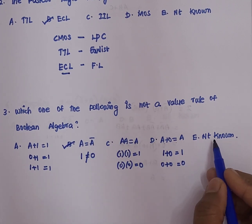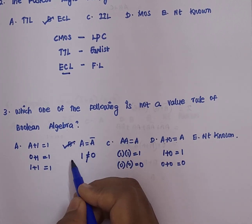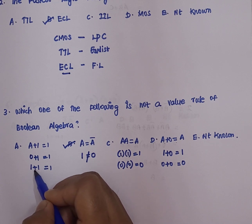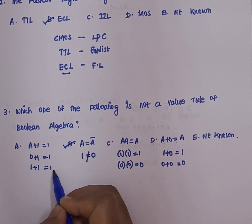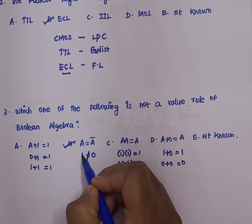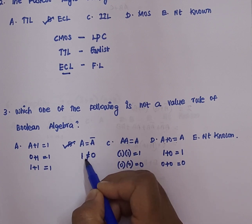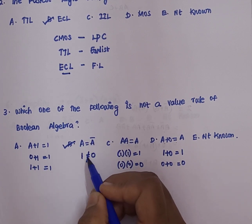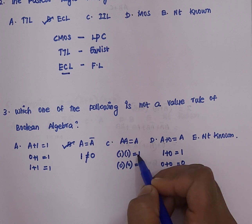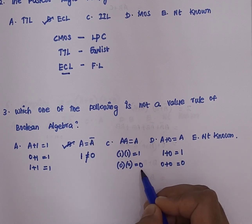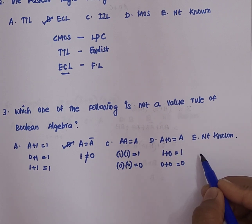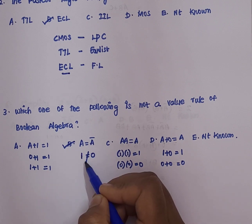To verify: substituting values into each option — a plus 1 equals 1 is satisfied for both 0 and 1. For option B, a equals a-bar: substituting a equals 1 gives a-bar equals 0, so 1 ≠ 0, meaning B is not correct. Options C and D are verified as valid. Therefore option B is not a valid Boolean algebra rule and is the correct answer.